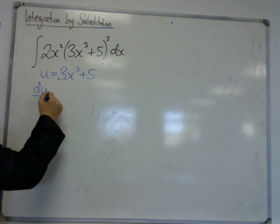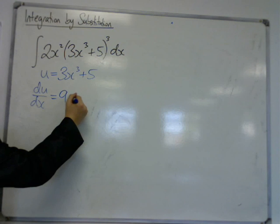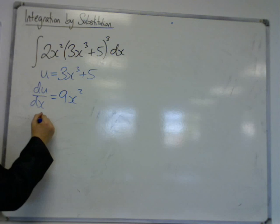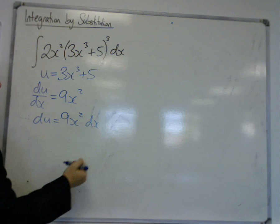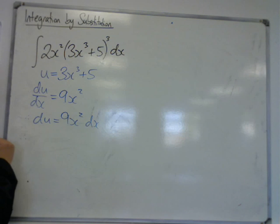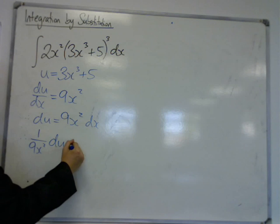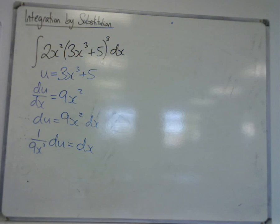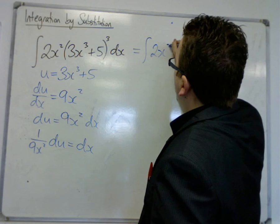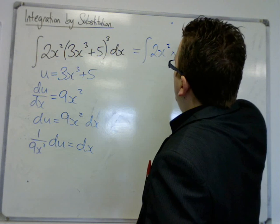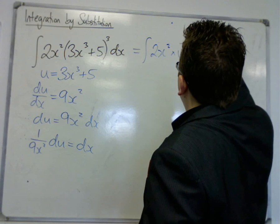You differentiate it, as we still need to get a replacement for dx. It's the same process every time. That gets us 9x^2. We multiply both sides by dx, and then I need to divide both sides by this 9x^2. So I've got 1/(9x^2) du is dx.